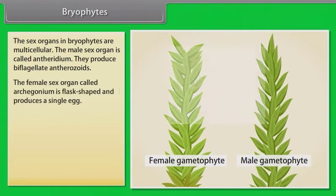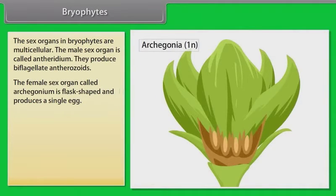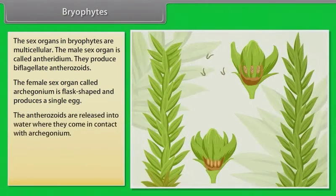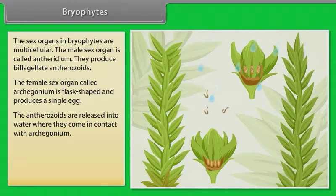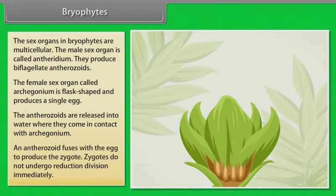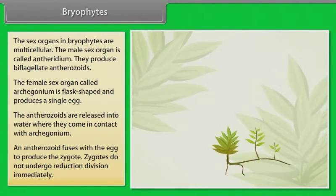The female sex organ called archegonium is flask-shaped and produces a single egg. The antherozoids are released into water where they come in contact with archegonium. An antherozoid fuses with the egg to produce the zygote.